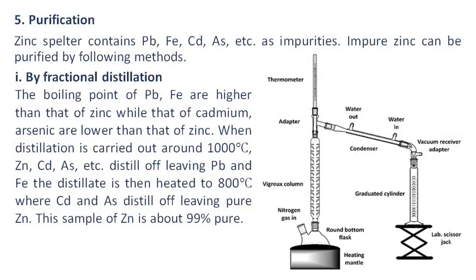Purification. Zinc spelter contains lead, iron, cadmium, arsenic, etc. as impurities. Impure zinc can be purified by the following methods. By fractional distillation: The boiling points of lead and iron are higher than that of zinc, while those of cadmium and arsenic are lower than that of zinc. When distillation is carried out around 1000 degrees Celsius, zinc, cadmium, arsenic, etc. distill off, leaving lead and iron. The distillate is then heated to 800 degrees Celsius where cadmium and arsenic distill off, leaving pure zinc.